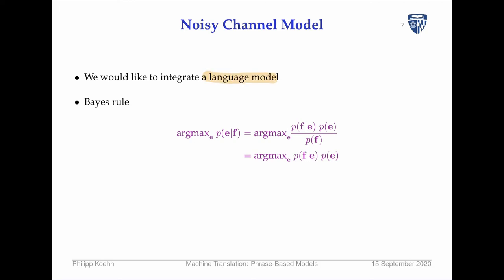For this we use Bayes' rule. For a given foreign sentence f, we theoretically consider all possible English sentences. The probability distribution gives us a probability that any arbitrarily chosen English sentence is a translation of that foreign sentence. We're interested in the argmax — the E that maximizes probability — so we want to find the best translation.